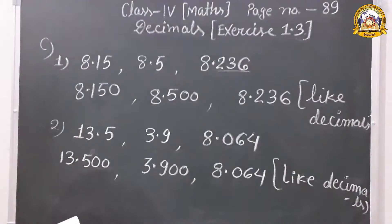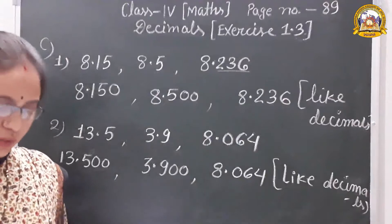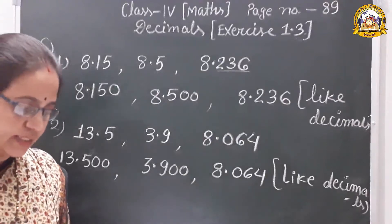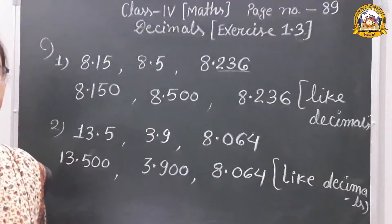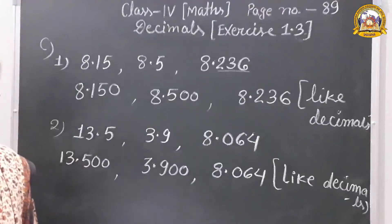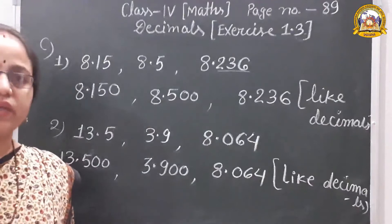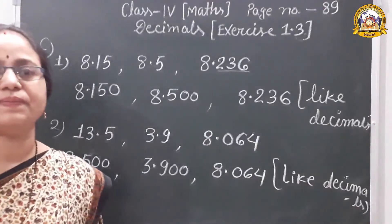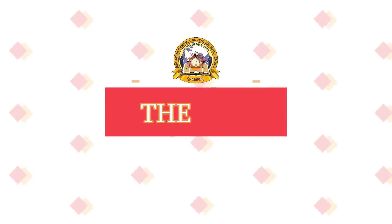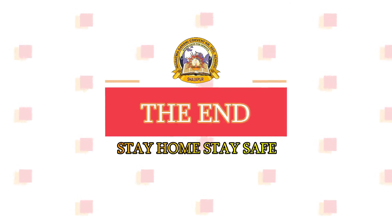So, we have found out the equivalent decimal and the like and unlike decimals. Exercise 1.3 is finished. The remaining questions you have to solve as practice. Thank you so much.